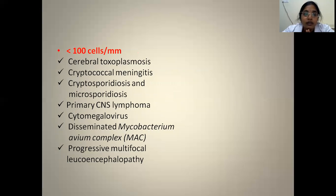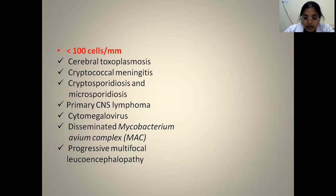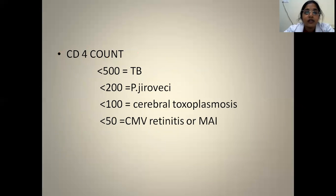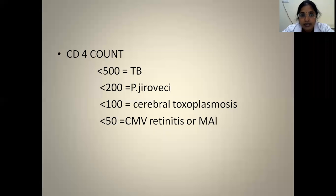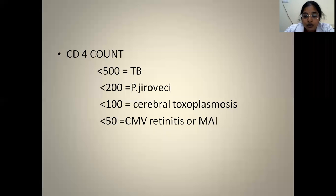When CD4 count drops below 100, cerebral toxoplasmosis, cryptococcal meningitis, cryptosporidiosis, primary CNS lymphomas, cytomegalovirus infections, and MAC infections occur. To summarize the key thresholds: below 500 TB manifests; below 200 patient can present with PCP pneumonia; below 100, AIDS patient can present with seizures due to cerebral toxoplasmosis, which is the most common cause of seizures in AIDS individuals in final stages; and if less than 50, blindness occurs due to CMV retinitis.